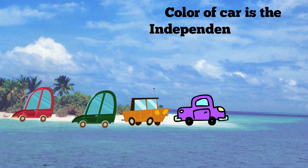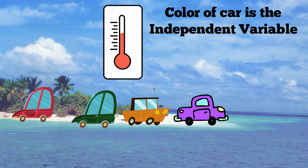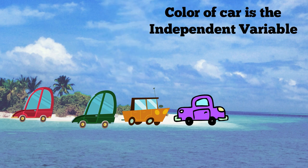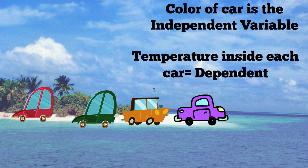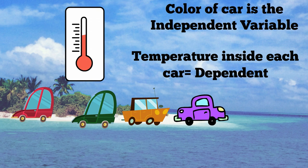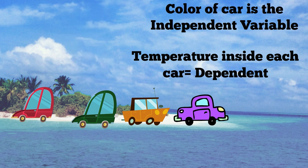The color of the car is your independent variable. It will not change based on the outside temperature and you have four different colors — you are changing this variable by choosing the different colors. The change in temperature inside each car is your dependent variable. It may vary according to the car's color, and you will be measuring it by taking the temperature every 30 minutes for 2 hours.